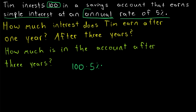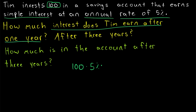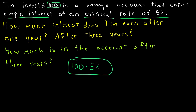The interest rate is annual, so we want to measure time in years. The first question is asking how much interest has been earned after one year, so we're multiplying by one. The answer to the first question is 100 times 5%, which is 5. In one year, Tim earns 5% of his original investment of 100.